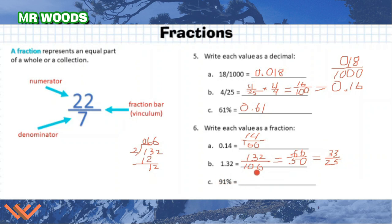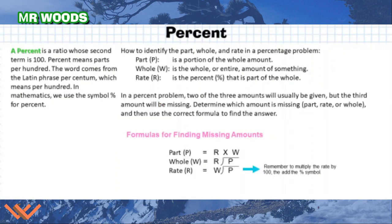And then ninety-one percent into a fraction. Again, it's just bringing that out. Ninety-one divided by one hundred. I can't reduce that any further. And that's my answer for this one here. Percent. So a percent is a ratio whose second term is one hundred. Percent means parts per hundred. The word comes from the Latin phrase per centum, which means per hundred. In mathematics, we use the symbol percent here. It's right here. That's my percent symbol for percent.